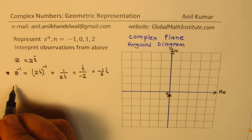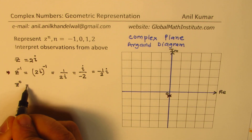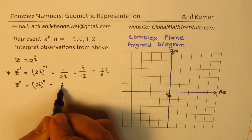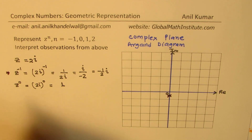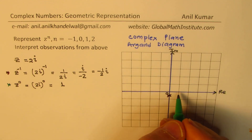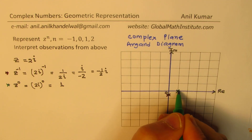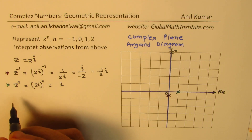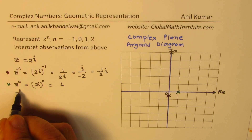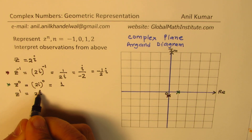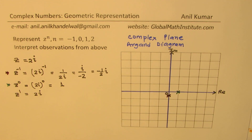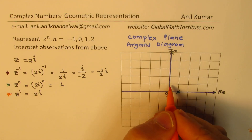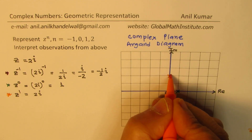Now let's talk about z to the power of 0, which means 2i to the power of 0. Anything to the power of 0 is just 1, so that will be a real value of 1, represented in green. Now let's talk about power 1. So z to the power of 1 will be 2i, whose magnitude is 2, and this will be represented on the imaginary axis right there.